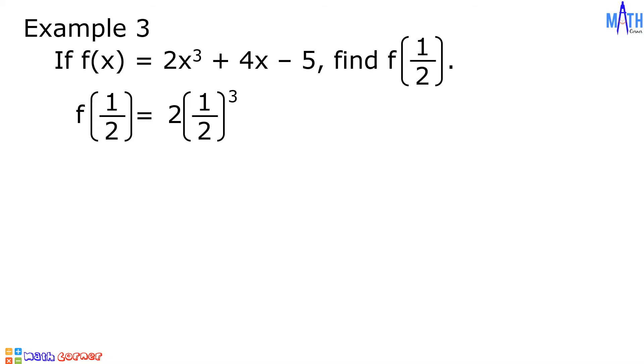Example number 3. If f(x) = 2x³ + 4x - 5, find f(1/2). Let us substitute 1/2 to x. f(1/2) = 2(1/2)³ + 4(1/2) - 5.